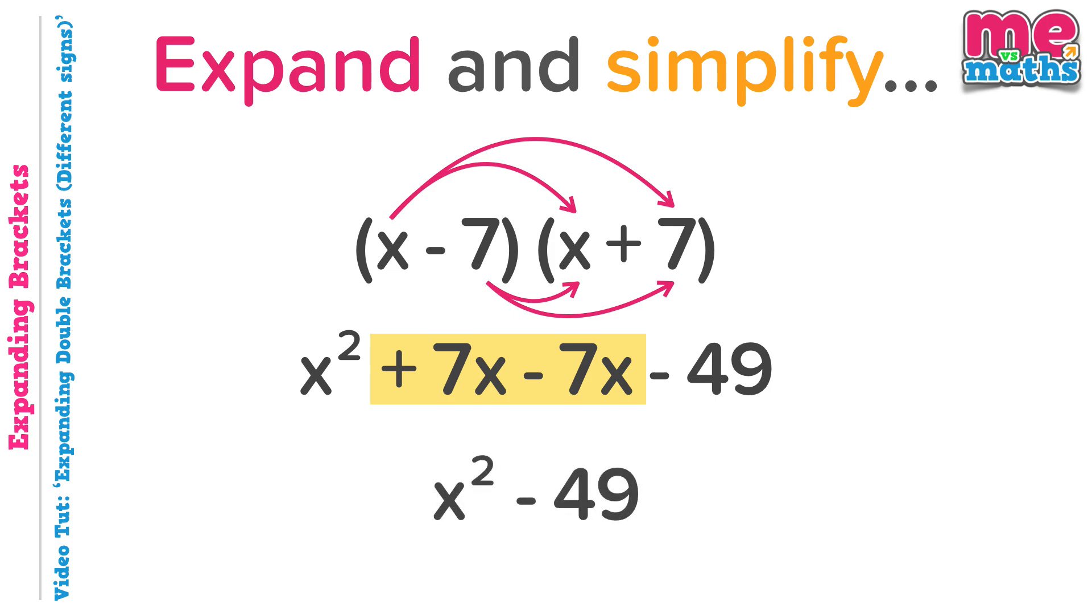So when I come to write my final answer, we still have the x squared and we'll still have the minus 49, but we don't have those x's in the middle. Our simplified answer, as you can see there, is just x squared minus 49.